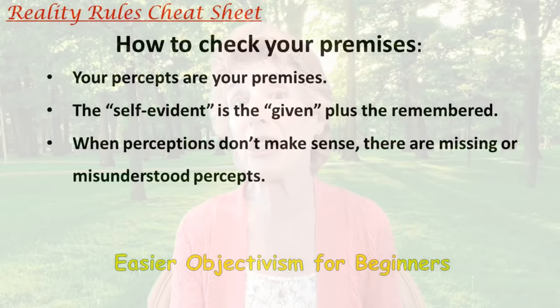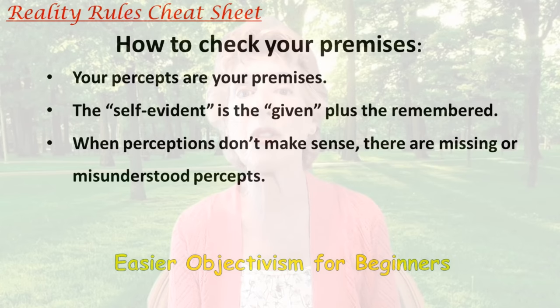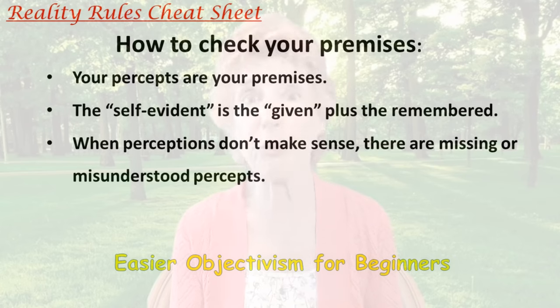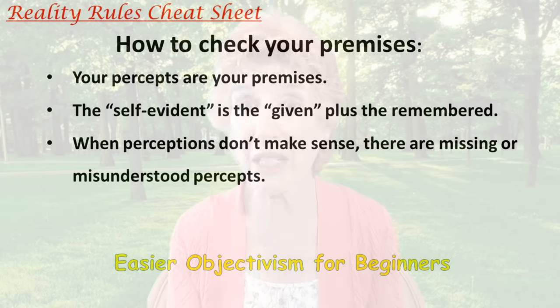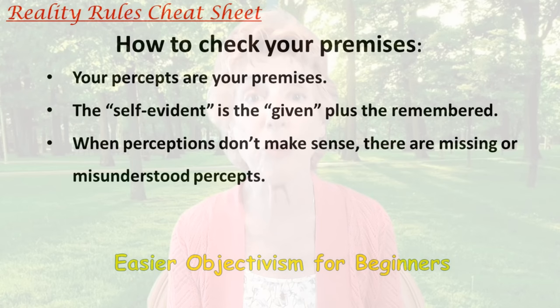Ayn Rand said: check your premises. In the Start Here video, tip number three was reality rules. Here's the reality rules cheat sheet with three facts to remember when you're checking your premises: your percepts are your premises; the self-evident is the given plus the remembered; when perceptions don't make sense, there are missing or misunderstood percepts.